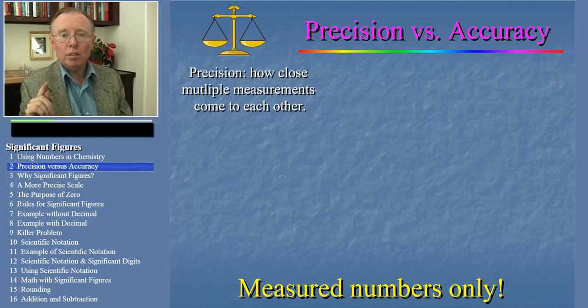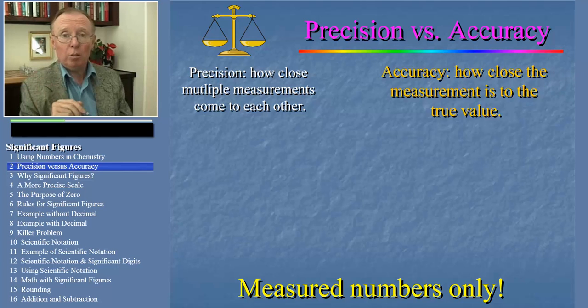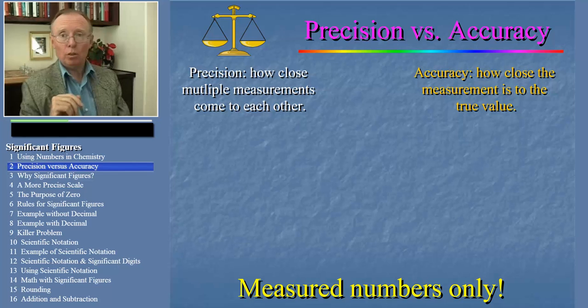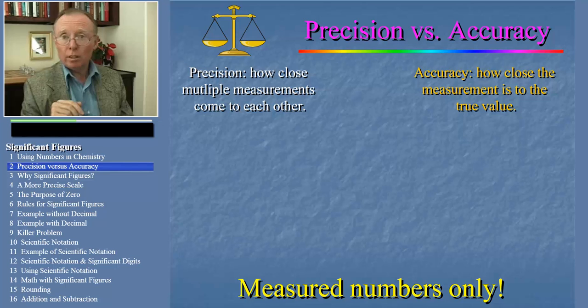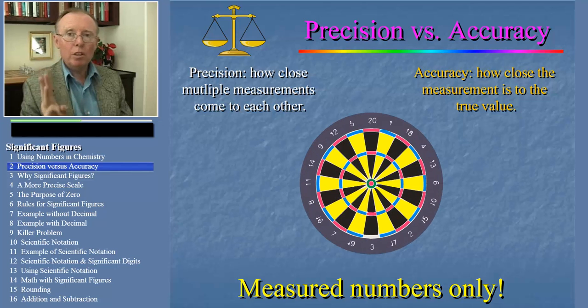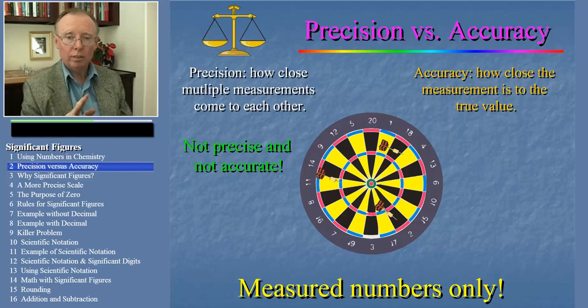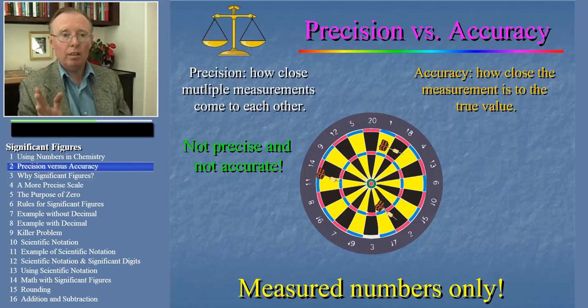The precision of a measurement is the degree to which the measurement can be repeated to give the same result. The accuracy of a measurement is how close the measurement is to the true value. Now, to illustrate these principles, let's look at a dartboard. If I throw three darts, and they land on different points on the board, I'm neither precise nor accurate. I'm not precise because the darts aren't close to one another, and I'm not accurate because the darts are not in the center.